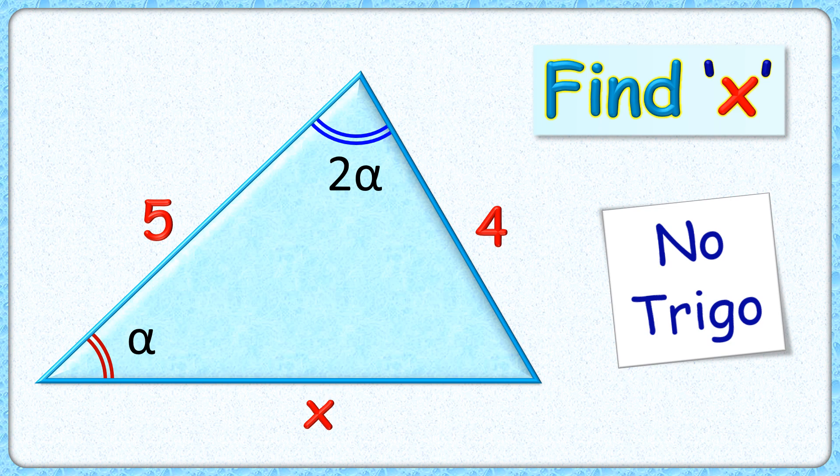Wow, this question looks fun to solve! Given to us is a triangle with side lengths 5, 4, and x centimeters. Two of its angles are alpha and 2 alpha. The exciting part is, with this limited data, we have to find the value of x without using any trigonometric formulas.